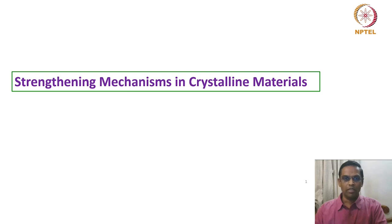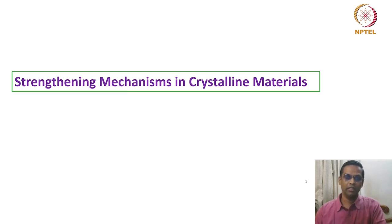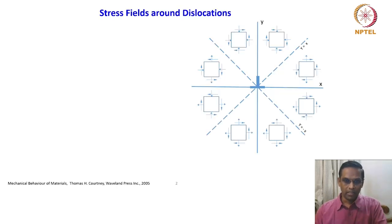We will talk about two things with the addition of a solid solution — that is, addition of a foreign atom to the matrix — and what changes it brings in, and what kind of stress field surrounds the solute atom with respect to the solvent atom or solvent matrix. These are the key concepts, and we will recollect what we have already seen about dislocation.